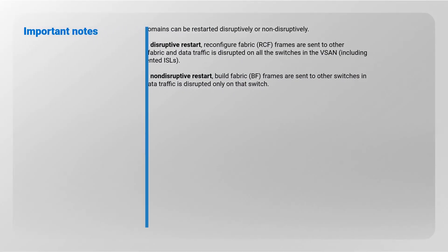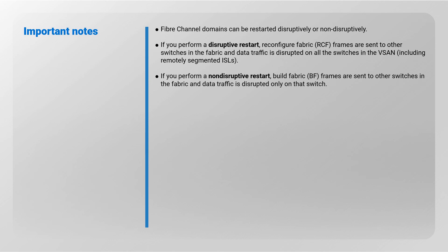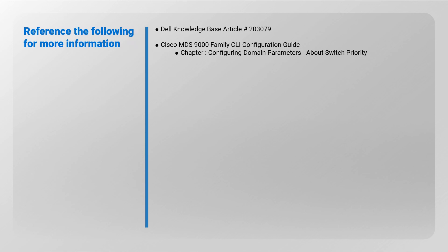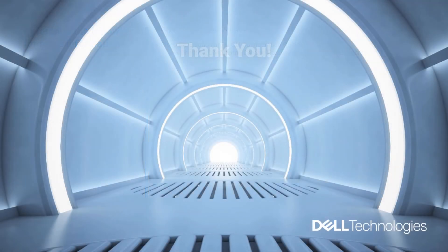Important notes: Fibre Channel domains can be restarted disruptively or non-disruptively. If you perform a disruptive restart, reconfigure fabric frames are sent to other switches in the fabric and data traffic is disrupted on all switches in the VSAN, including remotely segmented ISLs. If you perform a non-disruptive restart, build fabric frames are sent to other switches and data traffic is disrupted only on that switch. Refer to Dell knowledge base article 203079 and the Cisco MDS 9000 Family CLI Configuration Guide, chapter on configuring domain parameters, for more information.